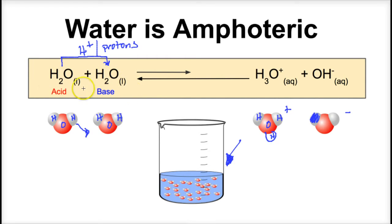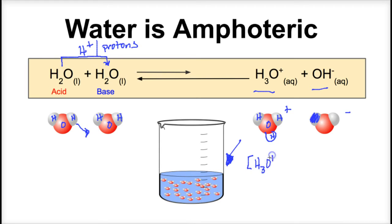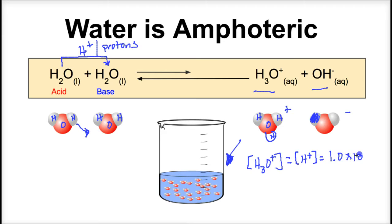You might be wondering: when you drink water from a glass, are you actually drinking hydronium ions and hydroxide ions? The answer is yes — you are drinking a very small quantity of hydronium ions and hydroxide ions. The H3O+ concentration — where brackets denote concentration of a solute in water — is typically shortened to just H+. In any amount of water, the hydrogen ion concentration equals 1.0 × 10⁻⁷ moles per liter, and the OH⁻ concentration is also 1.0 × 10⁻⁷ moles per liter.